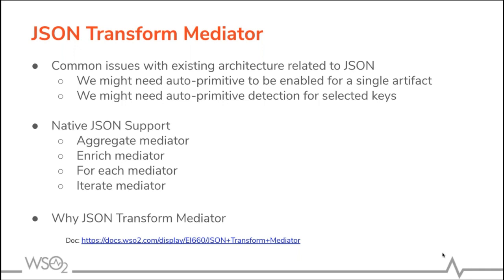With the adoption of JSON, the ESB was equipped with some configuration to fix these problems, but these properties do not allow any fine-tuned changes. For example, consider the auto primitive property, which will enable us to automatically detect and parse values to primitives. We might need auto primitives to be enabled for one proxy and disabled for another — which is not possible because it is a globally applied property. Also, there can be a case where we need auto primitive detection for selected keys only, which is also not possible. As a solution, we have given native JSON support for EI. In EI 6.6.0 onwards, it contains native JSON support for all possible mediators such as aggregate mediator, enrich mediator, for-each mediator, and iterate mediator.